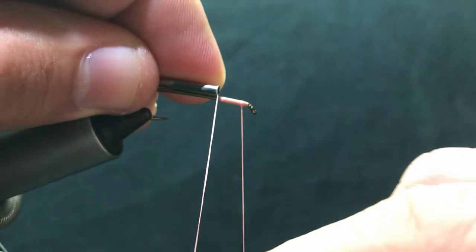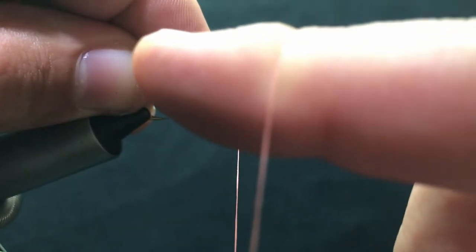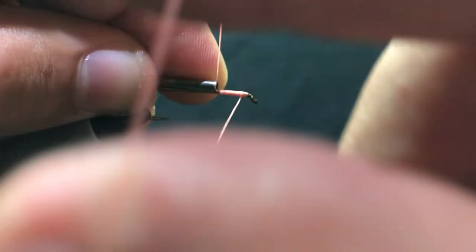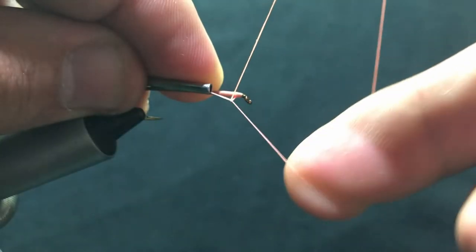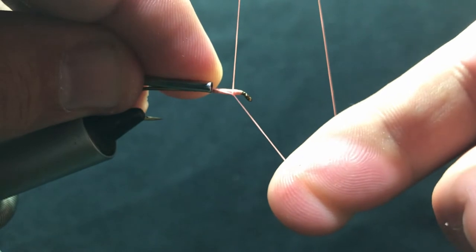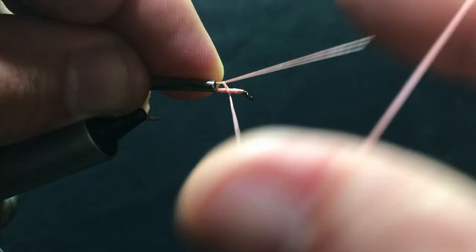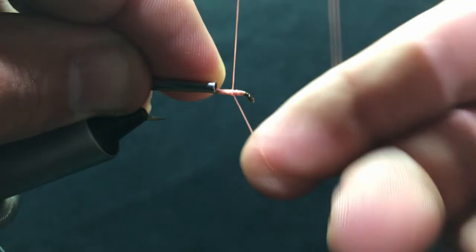Tip number one, especially for you noobs out there, practice, practice, practice. I did this routine with a pipe and rope about a thousand times. Then I upgraded to what I'm doing right here with just a hook and thread. By the end of it, the whip finish knot was second nature for me.